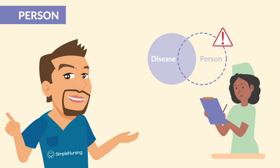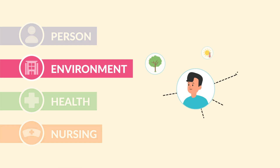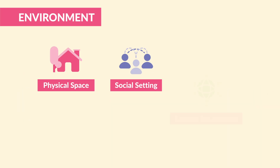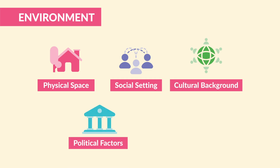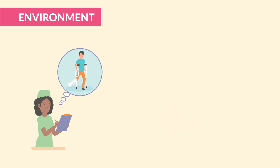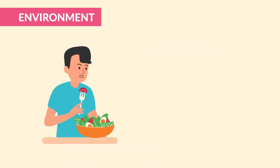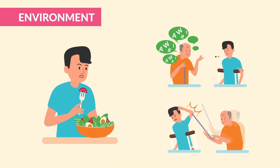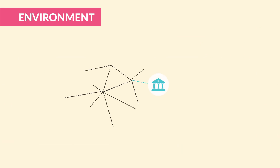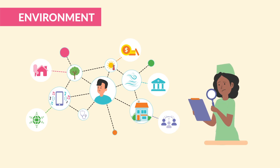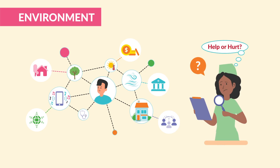Next is environment. This is everything around the patient that affects their health — the physical space, the social setting, the cultural background, even political and economic factors. It's the reason why you notice if the patient has three flights of stairs and no elevator before sending them home with a set of crutches. It's why you consider if they have access to healthy food or if they're living in a noisy, unsafe neighborhood that affects their recovery. Environment is not just about hospital room versus home — it's every factor, big or small, that can help or even hurt their health.